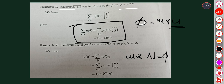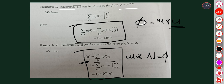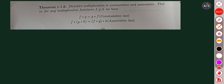Now we have to use the complex function — this is the basic function definition. Next, the theorem: Dirichlet multiplication is commutative and associative. Commutativity and associativity are both important, and we will now prove them. For commutativity: f star g equals g star f. For associativity: f star (g star h) equals (f star g) star h.